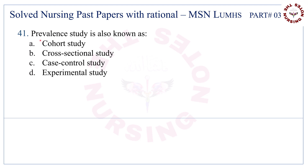Question number 41. Prevalence study is also known as — the correct answer is B — cross-sectional study.